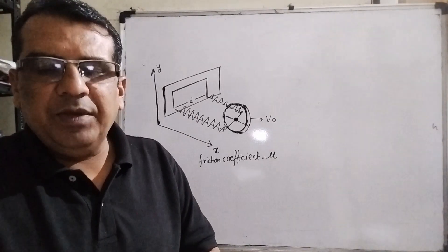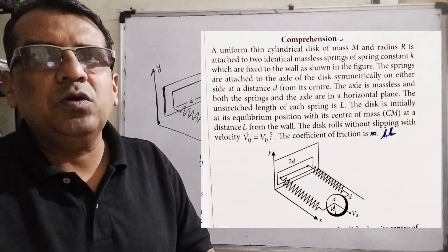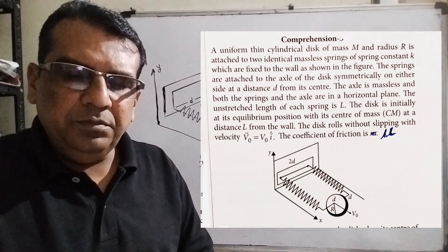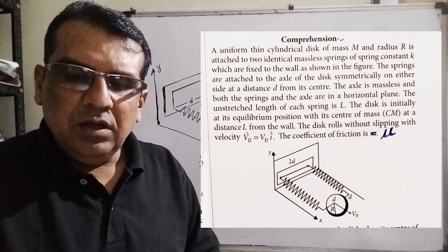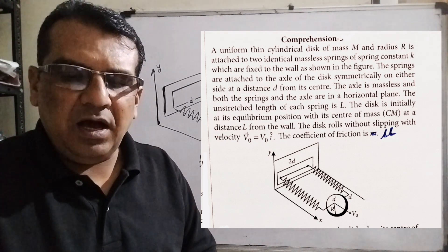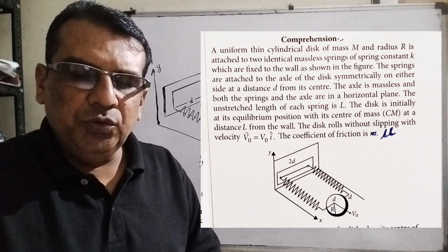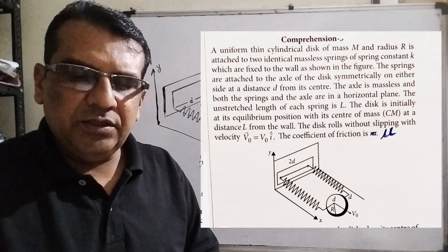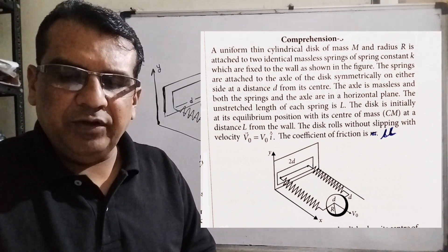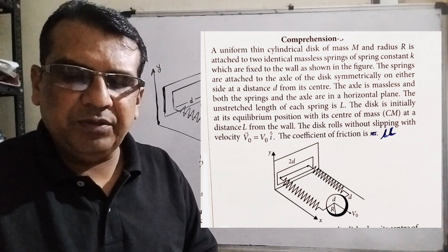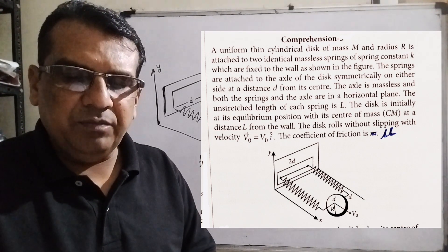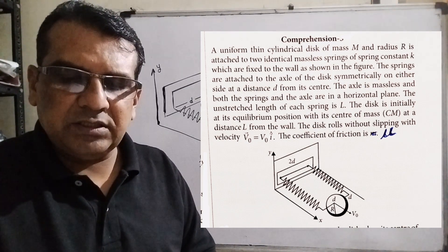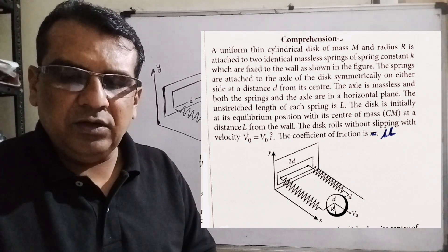What does the question say? The question is based on comprehension, meaning three questions are included in this paragraph. A uniform thin cylindrical disk of mass M and radius R is attached to two identical massless springs of spring constant k, which are fixed to the wall as shown in the figure. The springs are attached to the axle of the disk symmetrically on either side at distance d from its center. The axle is massless and both the springs and the axle are in a horizontal plane.